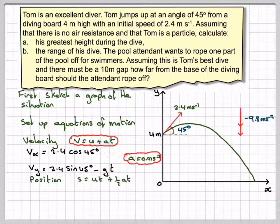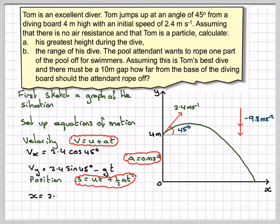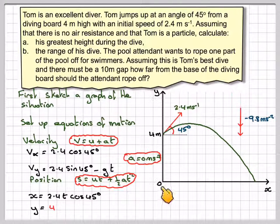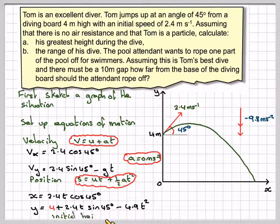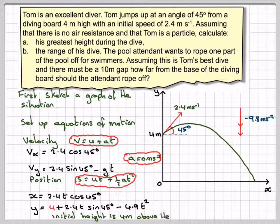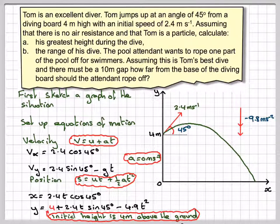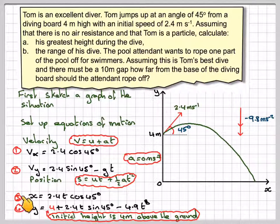The position, using s equals ut plus one half at squared. x will be 2.4t cos 45. No gravity acting against it, so this last bit here will be 0. And y will be 4 because it starts at 4, plus 2.4t sin 45 minus 4.9t squared. The initial height is 4 metres above the ground. Call those equations 1, 2, 3, 4.